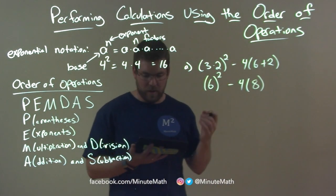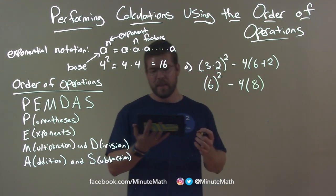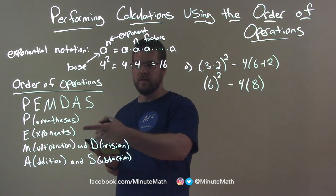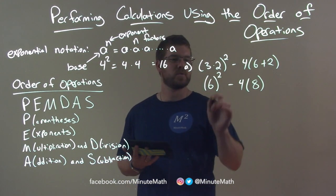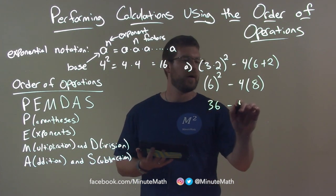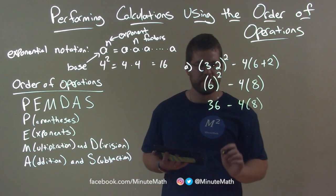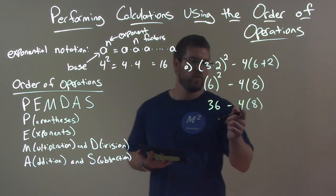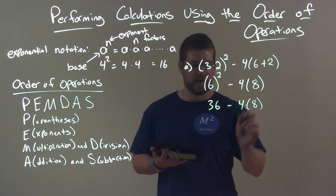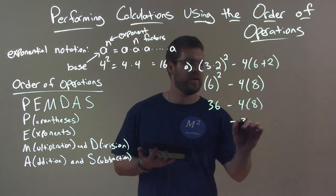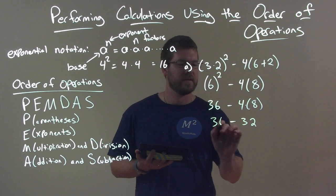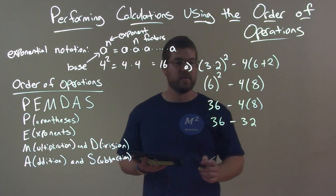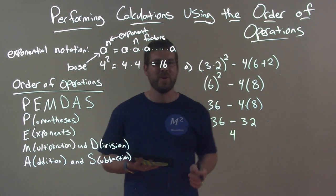Now we have 6 squared. Exponents are our next step — 6 squared is 36. So we have 36 minus 4 times 8. Next, multiplication and division: 4 times 8 is 32. We have 36 out here. Last operation is subtraction: 36 minus 32 is 4. And now we're done.